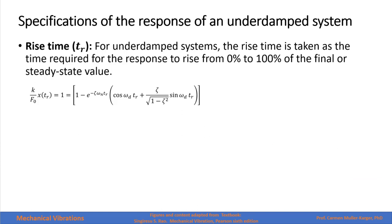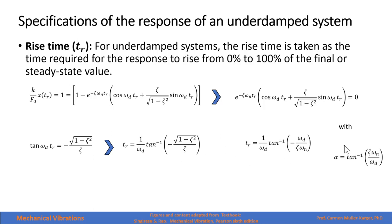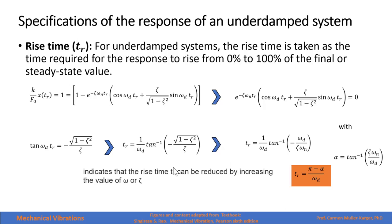For an underdamped system, the rise time is taken as the time required for the response to rise from 0 to 100% of the final or steady state value, meaning the response equals 1. Setting the expression equal to zero and solving for t_r, the exponential term cannot be zero, so the remaining part must be zero — which reduces to a tangent of the angle. Solving for the rise time gives t_r equals pi minus alpha over omega_d, where alpha is the angle defined as the arctangent of the expression involving zeta and omega_d.